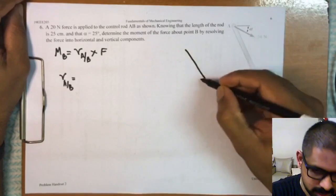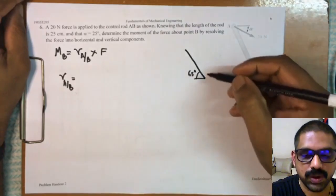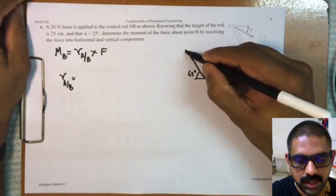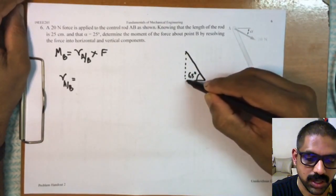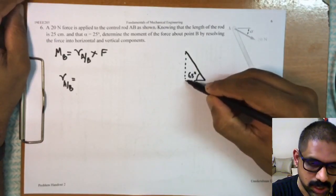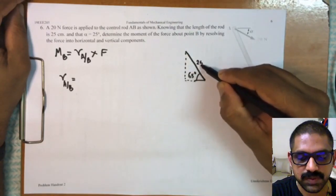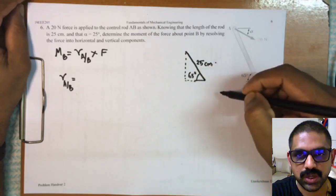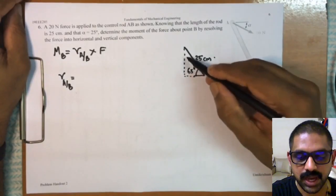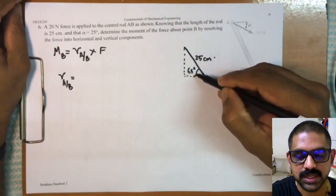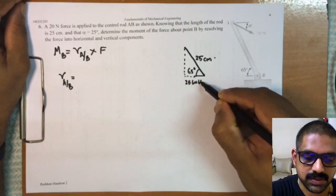...acting at an angle of 65 degrees, so what am I getting here? I am getting this to be my vertical component and this to be my horizontal component. So this horizontal component plus this vertical component becomes my total component, and this length is given as 25 centimeters. So it finally dies down to 25 cos theta, that is cos 65, and 25 sin theta, that is 25 sin 65.